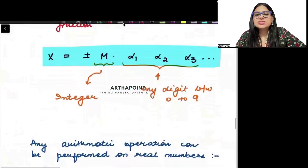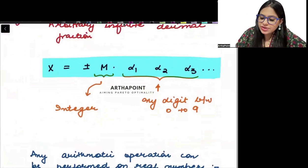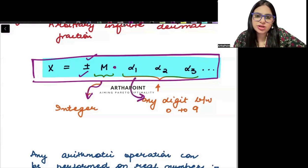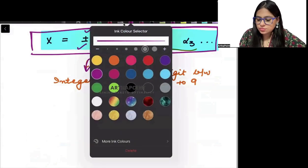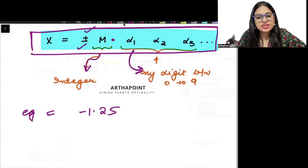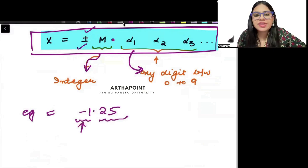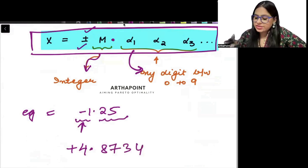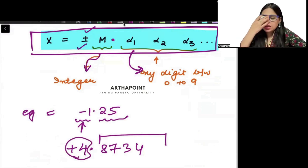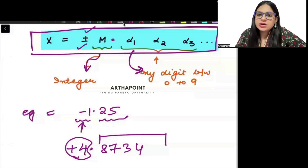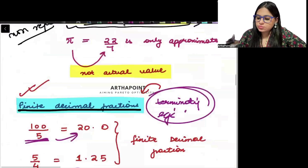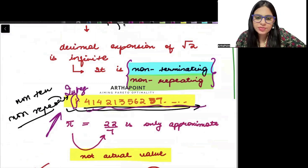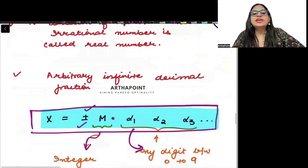Any real number can be represented in the form of plus or minus some integer with a decimal point and some digits between 0 to 9. For example, minus 1.25 has digits between 0 to 9 and integer part minus 1. Or plus 4.8734 has digits from 0 to 9 and integer part plus 4. Even root 2 when opened has an integer part and decimal digits between 0 to 9. So any real number, rational or irrational, can definitely be written in this format.